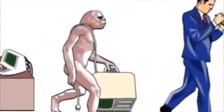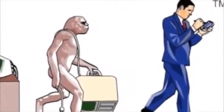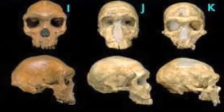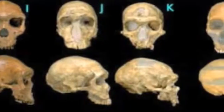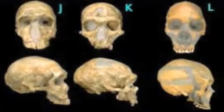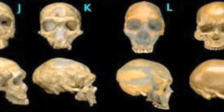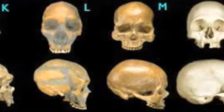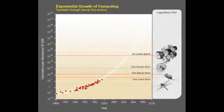To compare the rate of progress of the biological evolution of intelligence to that of technological evolution, consider that the most advanced mammals have added about one cubic inch of brain matter every hundred thousand years, whereas we are roughly doubling the computational capacity of computers every year. Of course, neither brain size nor computer capacity is the sole determinant of intelligence, but they do represent enabling factors.